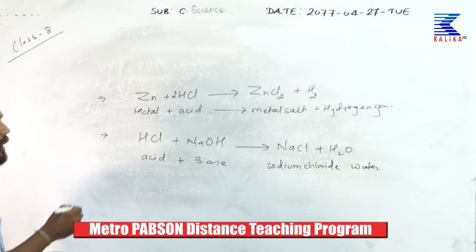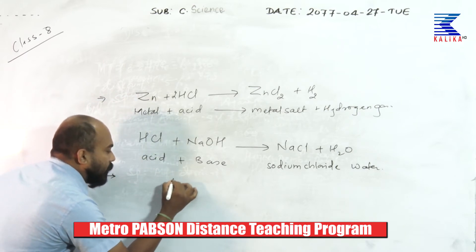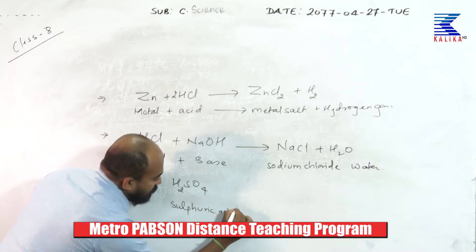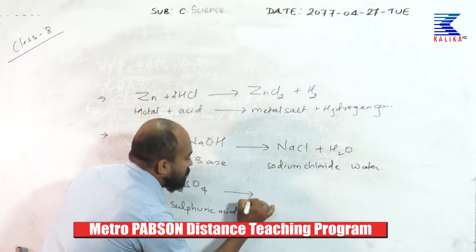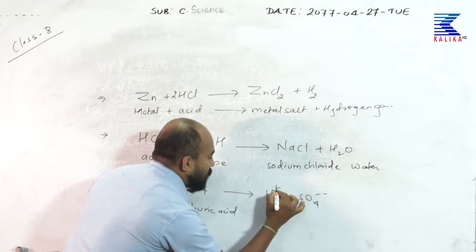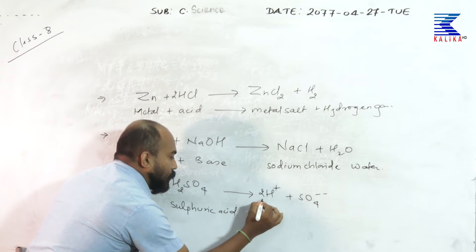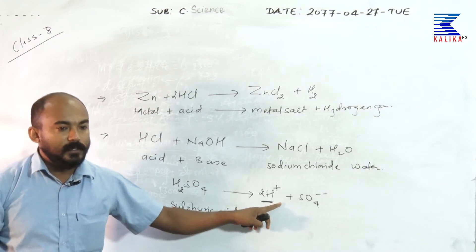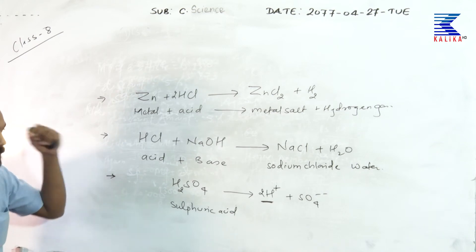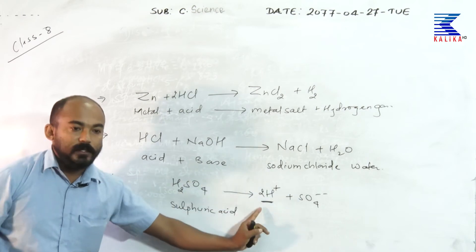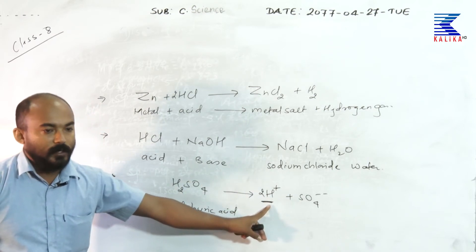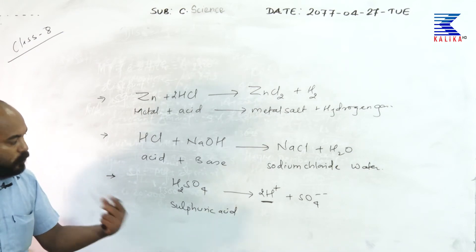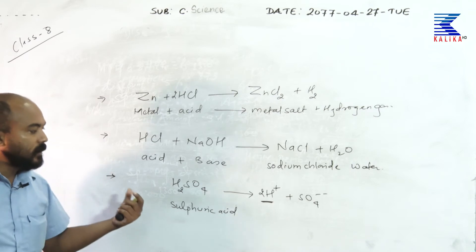The third chemical property is that acids give hydrogen ions when dissolved in water. For example, H₂SO₄ (sulfuric acid), when dissolved in water, ionizes into H⁺ and SO₄²⁻ radicals. Those substances which give H⁺ ions when dissolved in water are termed acids — this is the Arrhenius concept. Stronger acids furnish more H⁺ ions, whereas weaker acids furnish fewer H⁺ ions.